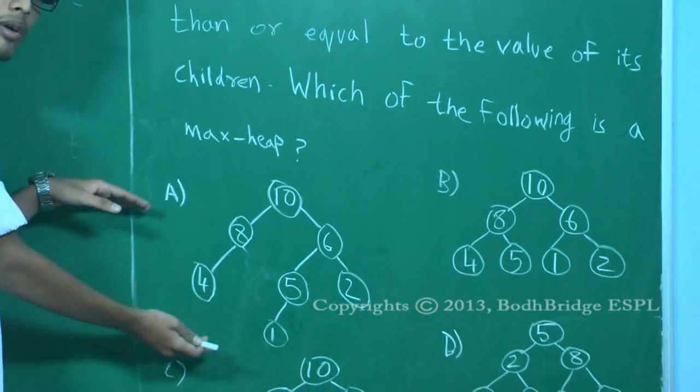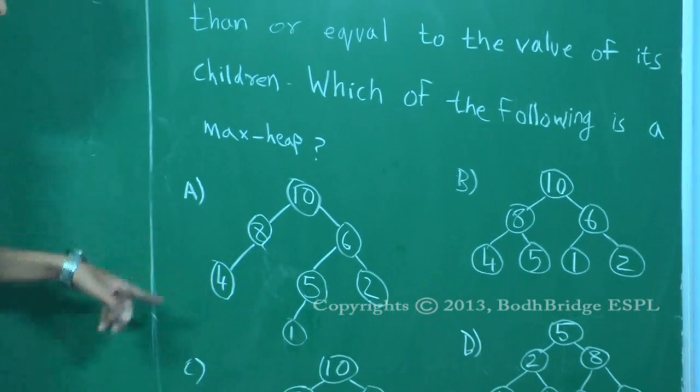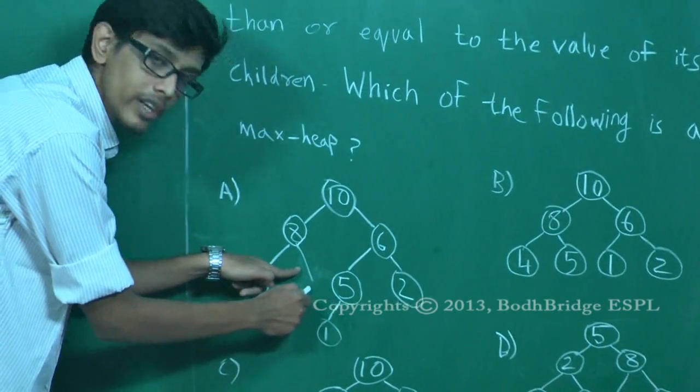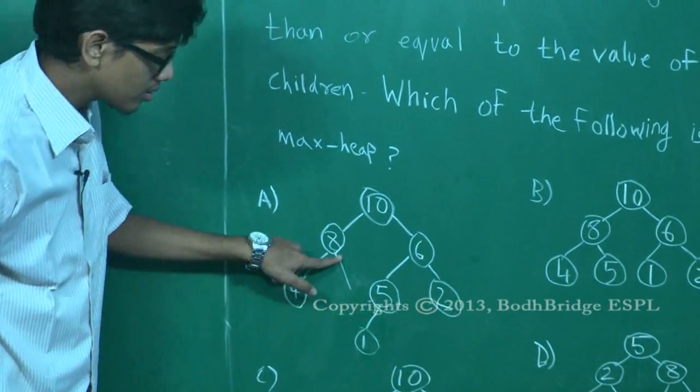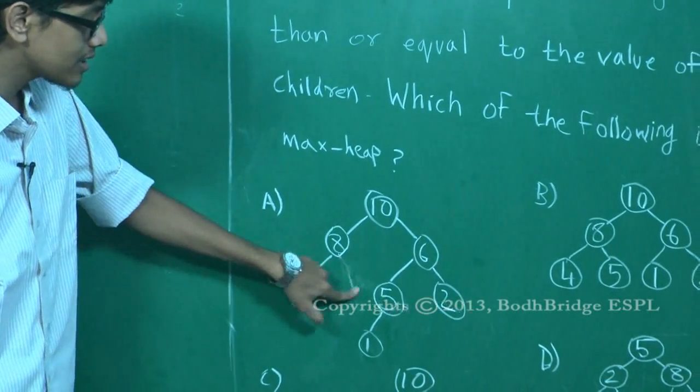So it satisfies the heap property but it is not a complete binary tree because there could have been a node here but there is no node here. So it is not a complete binary tree. So A is not a max heap.